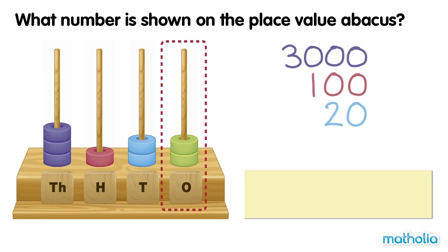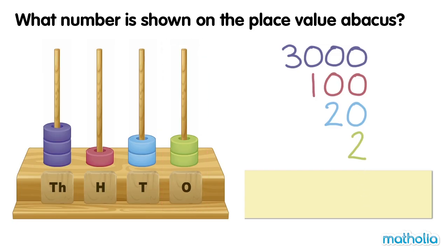In the ones place, there are also two beads. The beads have a value of two. The number shown on the place value abacus is three thousand, one hundred and twenty-two.